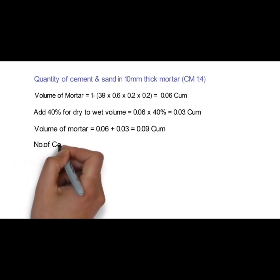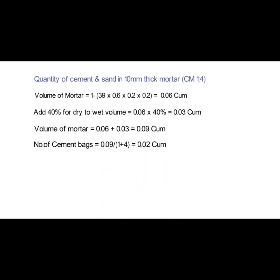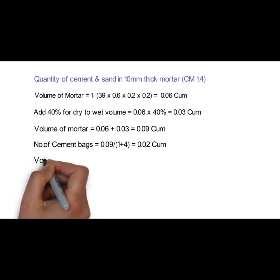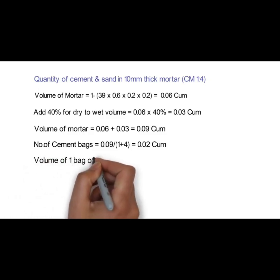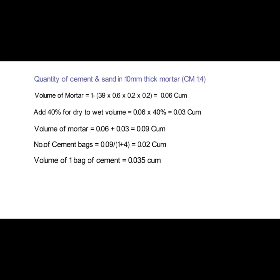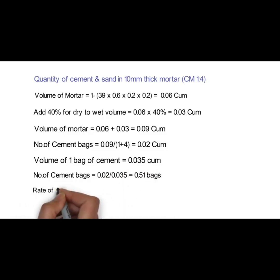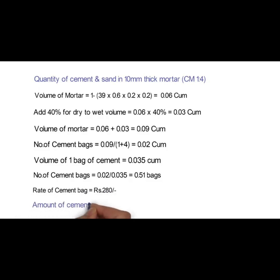Now we will calculate the number of cement bags. The formula is 0.09 ÷ (1 + 4) = 0.02 cubic meter, where 1:4 is the proportion of cement mortar, so the cement part is 1 out of 5. The volume of one bag of cement is 0.035 cubic meter, so dividing: 0.02 ÷ 0.035 = 0.51 bags. We will consider the rate of a cement bag as 280 rupees, so the amount of cement required shall be 0.51 × 280 = 143 rupees.